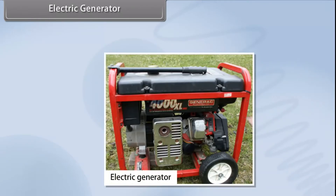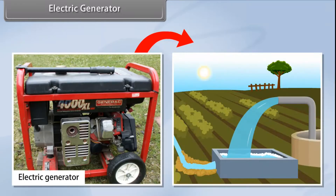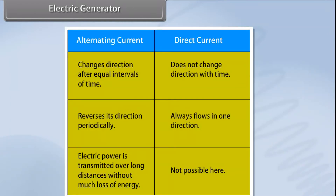An electric generator converts mechanical energy to electrical energy, forcing electrical charge to flow through an external electrical circuit — similar to how a water pump causes water to flow. Electric generators operate based on electromagnetic induction: whenever a conductor moves through a magnetic field, a current is induced. If a magnet spins inside a coil, alternating current is induced, which changes direction after equal intervals of time. The other type is direct current, which does not change direction with time.